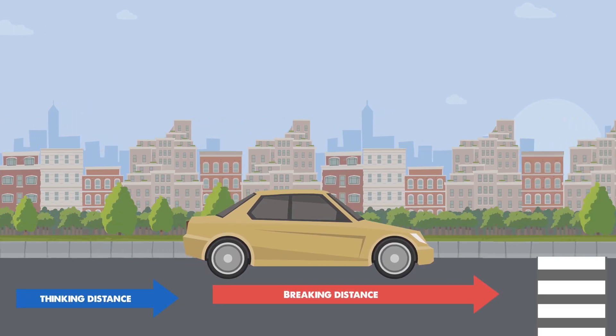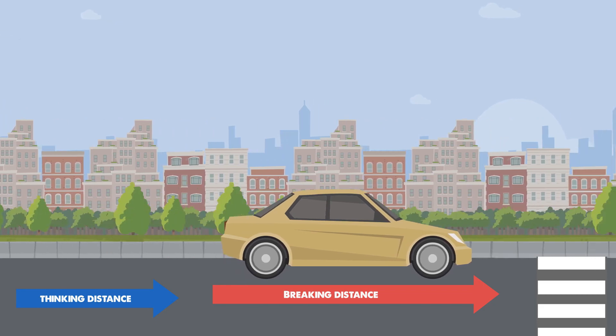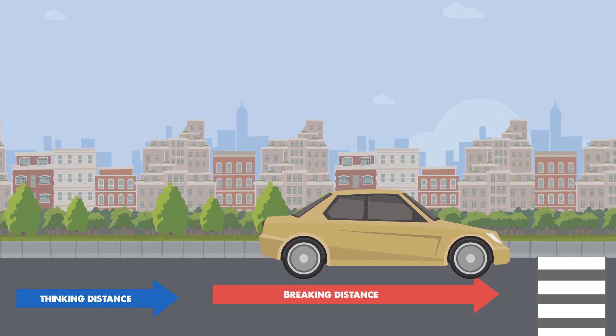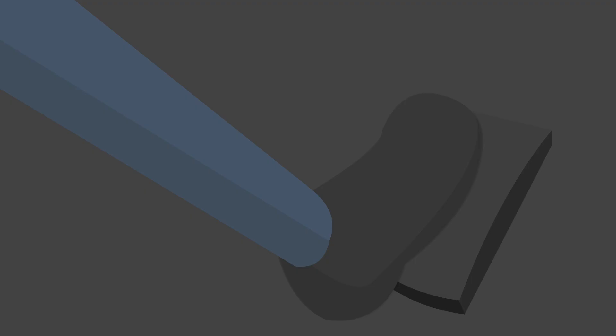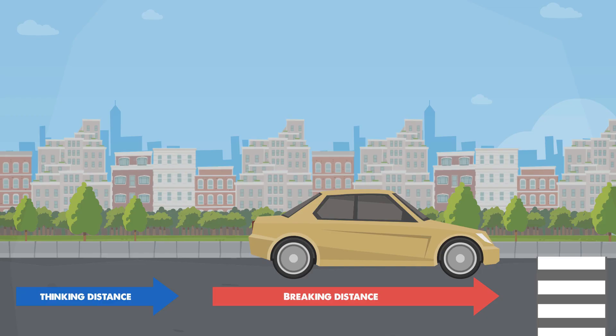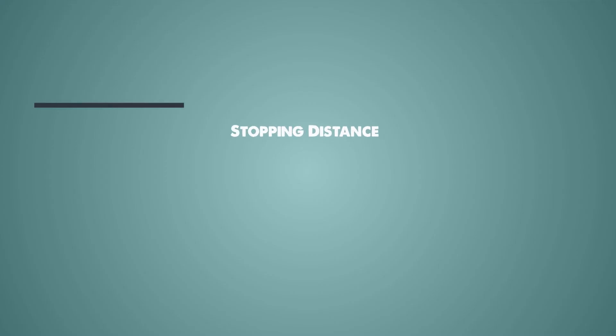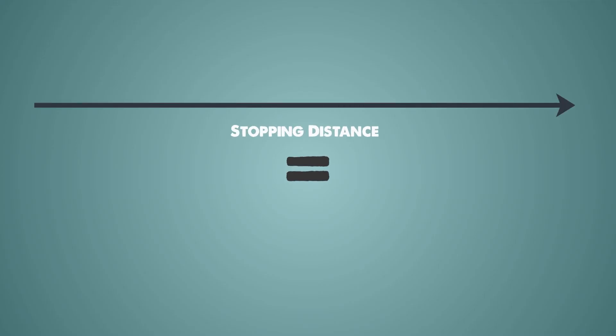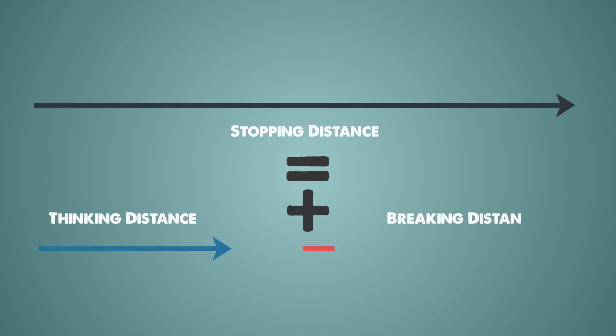The braking distance is the distance travelled from the moment they hit the brakes until the car comes to a complete stop. So the stopping distance just equals the thinking distance plus the braking distance.